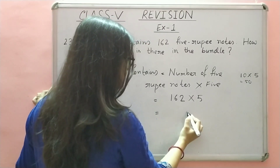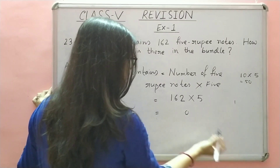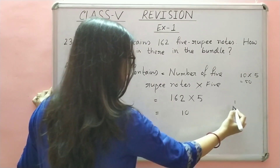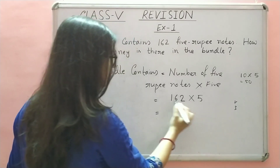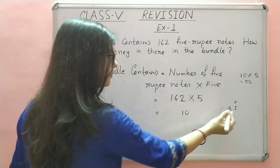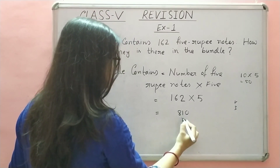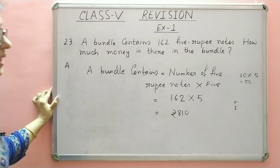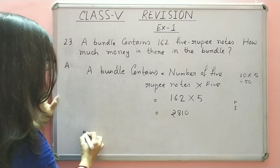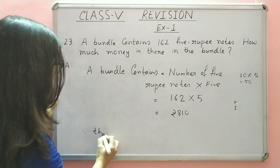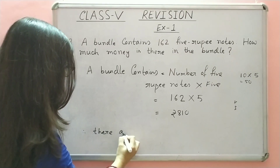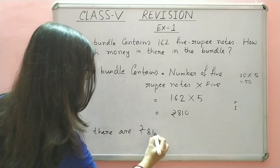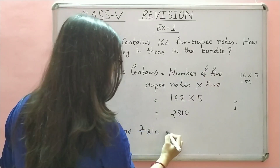5, 2's are 10, 0, 1 carry ho jayega. 5, 6's are 30, plus 1, 31, 1 aur 3 carry ho jayega. 5, 1's are 5, plus 3, 8. So, 810. Itna rupees ek bundle mein hai. Therefore, there are rupees 810 in the bundle.